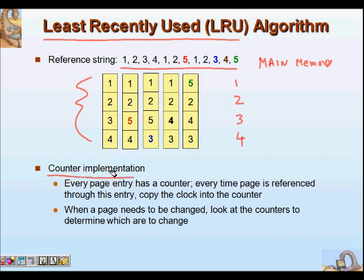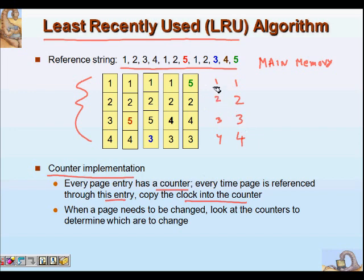This is the counter implementation: every page entry has a counter, and every time a page is referenced through its entry we copy the clock. So the clock tick for page one is one, for two it's two, for three it's three, and for four it's four. In the first second we access page one, second second we access two, third second we access three, fourth second we access four. Now in the fifth second we access page one again.